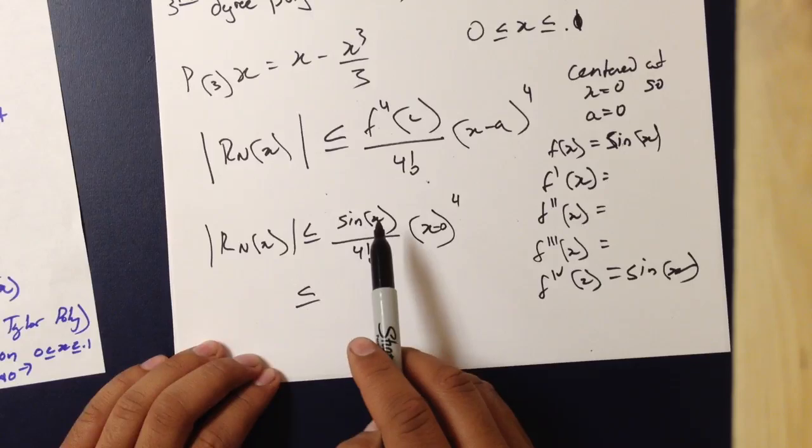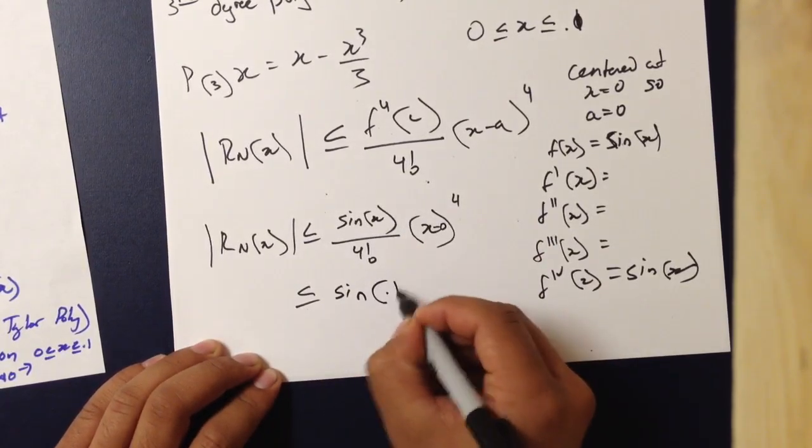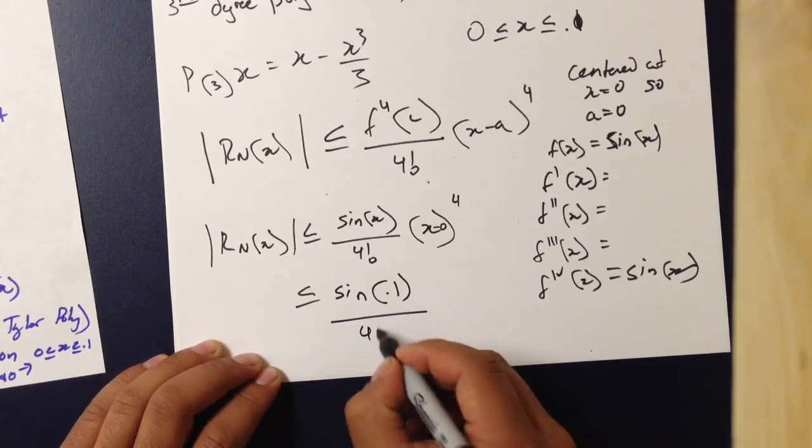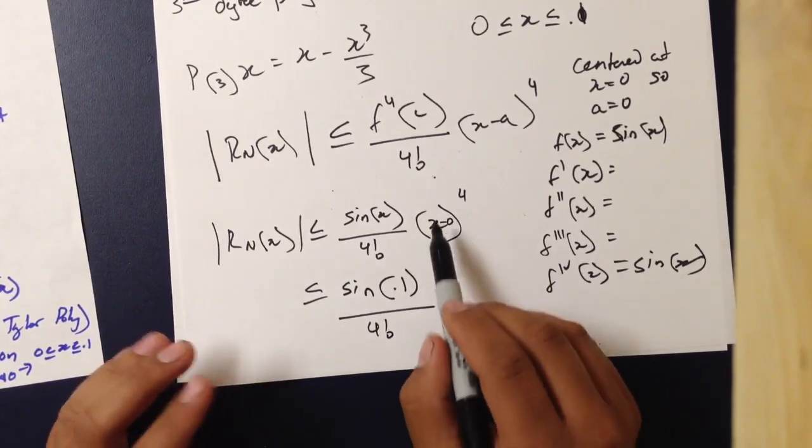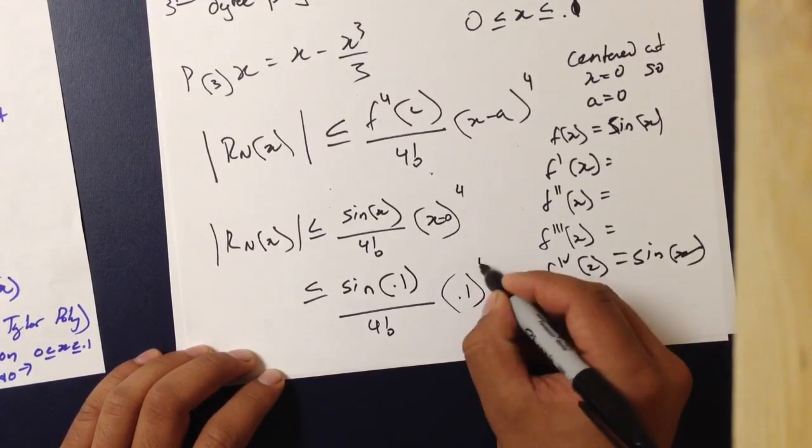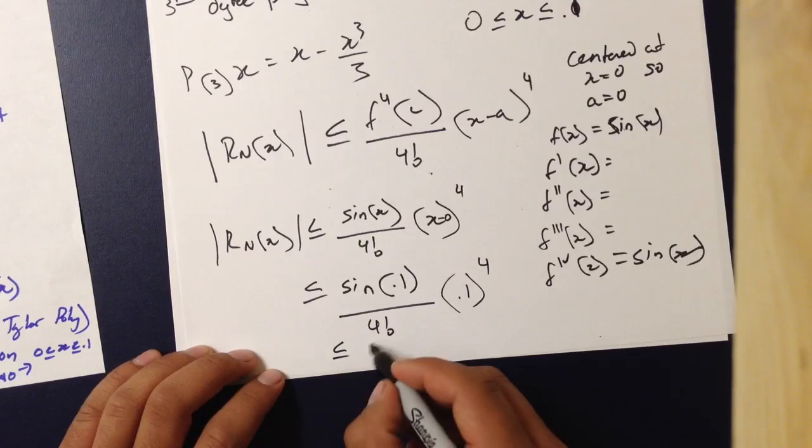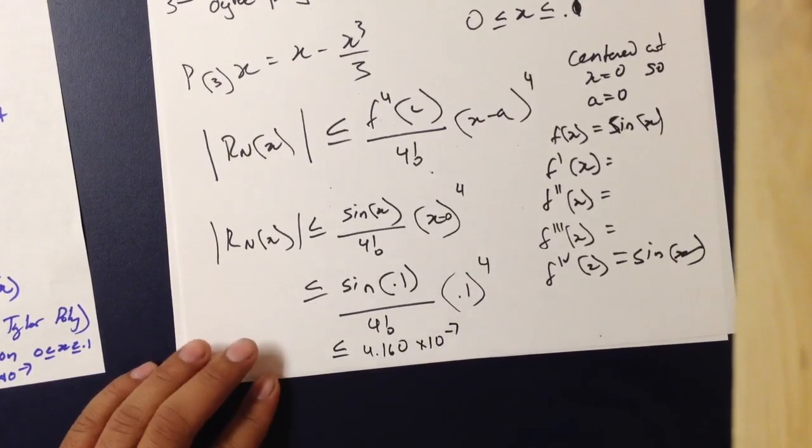Sine of x is as large as possible when x is 0.1. So, sine of 0.1 over 4 factorial times, when this is as large as possible, x is again 0.1. 0.1 to the fourth, which you'll eventually get to be equal to 4.160 times 10 to the negative seventh.